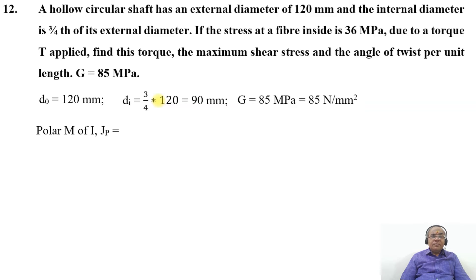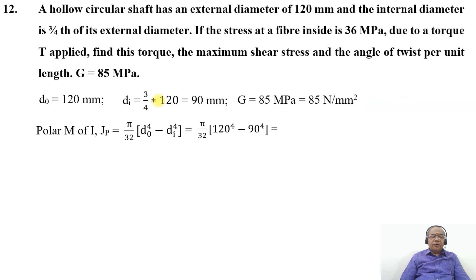The polar moment of inertia J_P will be equal to pi by 32 into (D_naught to the power of four minus Di to the power of four). Substituting the values: pi by 32 into (120 to the power of four minus 90 to the power of four). On simplification, we get that value as 13.9613 into 10 to the power of 6 mm to the power of four.